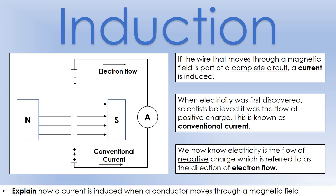Some terminology: when scientists were first working with electricity, they thought electricity was the flow of positive charge — that's what's labeled as conventional current, showing where they thought the current was going. We now know electricity is the flow of electrons, which we call electron flow. In our diagram, electron flow goes clockwise, from the top all the way around to the bottom. That's why we get EMFs and currents induced when we move a wire through a magnetic field — it's due to the force on the moving charges from the magnetic field.